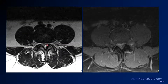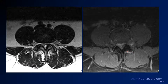On the axial images you see the same thing — posteriorly there's a little T2 hyperintense structure that's significantly narrowing the thecal sac, and it's probably arising from this inflamed facet. When you give contrast you see some inflammatory changes around the facet particularly posteriorly, but the abnormality itself is not enhancing.